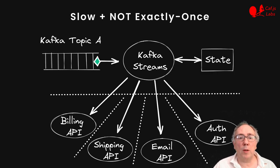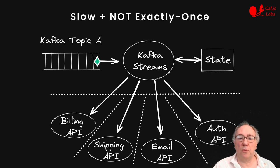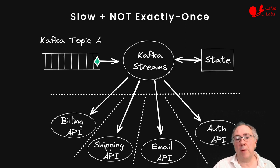So what about the smaller companies? The challenge is they are increasingly dependent on third-party API providers for billing, shipping, accounting, fraud detection, and so on. Therefore, the processing of an event from a Kafka topic could require one or many external API calls.